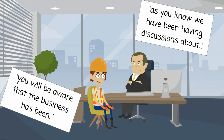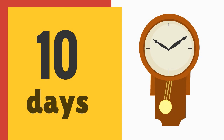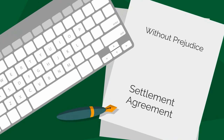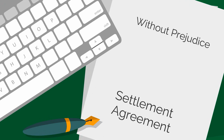Here are some useful phrases to start your talks: 'As you know, we have been having discussions about...' or 'You will be aware that the business has been...' — keep to the facts rather than opinions. The ACAS Conciliation Service recommends that you give your employee at least 10 days to get legal advice on the settlement agreement and make their decision. If you can, give the employee a copy of the settlement agreement that your solicitor has drawn up, or record the main terms that you have agreed.